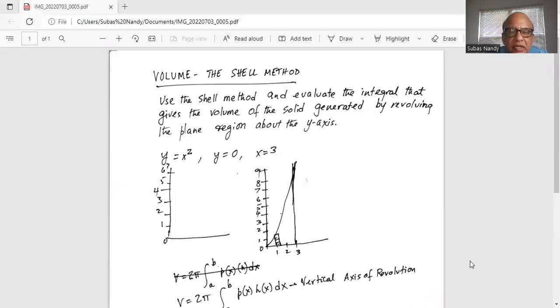y equals x-squared is the curve going up, y equals 0 is the x-axis, and x equals 3 is the vertical line drawn at x equals 3.